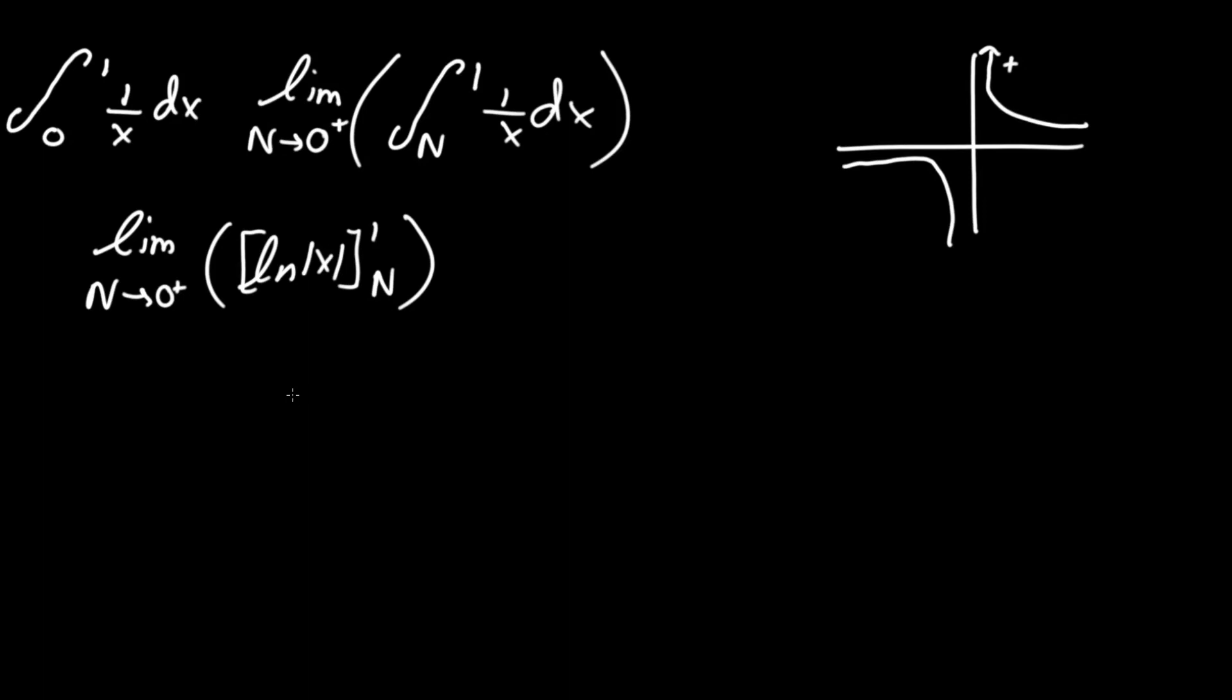So all we got to do now is a little bit of plugging the numbers. We write again limit of n approaching 0 from the plus side, and now as we plug in 1, we get ln of 1, and we subtract that by ln absolute value of n.